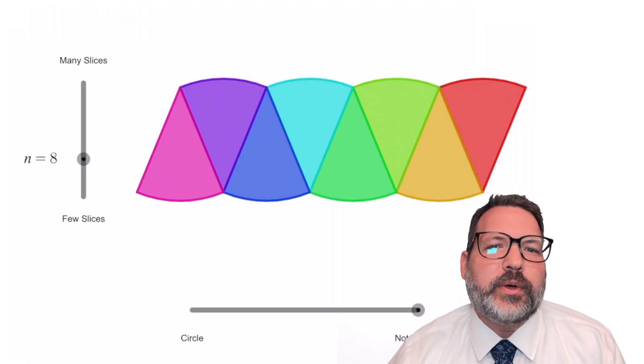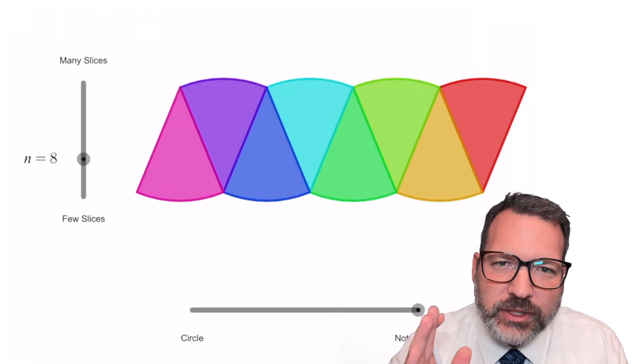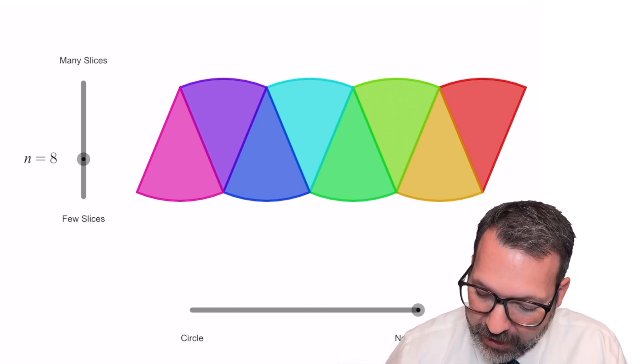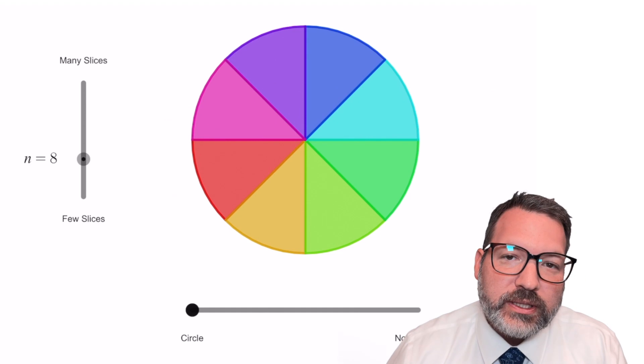But if we decide we don't want to mess with that, we don't want to actually figure out what that straight up and down height is, we'd much prefer to use that slanted height, which again we know matches the radius of the circle itself.